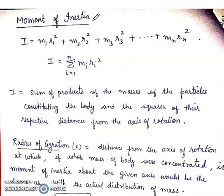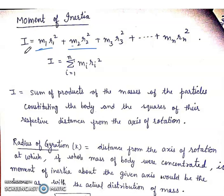Next is the concept of moment of inertia. Moment of inertia is mass into distance squared. I equals the sum of products of masses of the particles constituting the body and the square of their respective distances from the axis of rotation. So I equals M1R1² plus M2R2² plus M3R3² up to MN·Rn². In simplified form, I equals summation of Mi·Ri², where i varies from 1 to N.